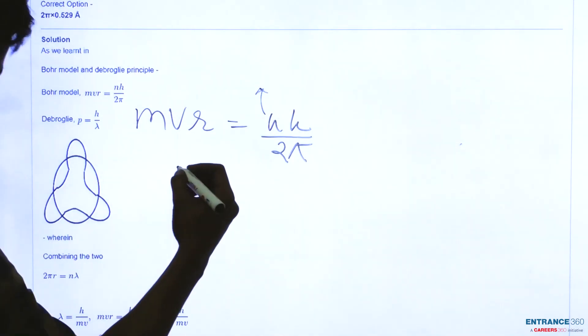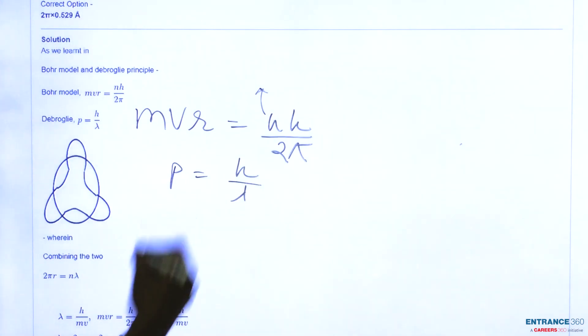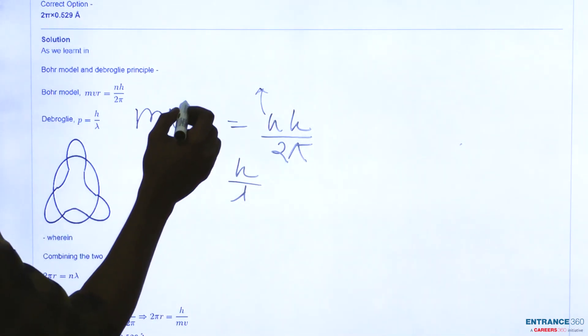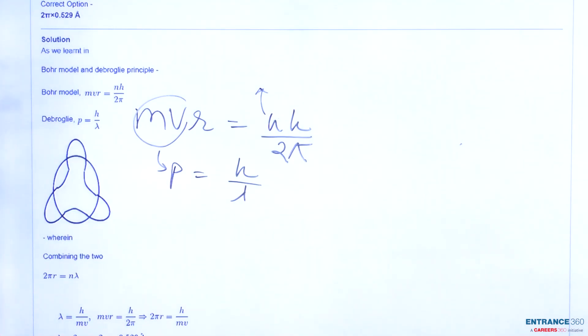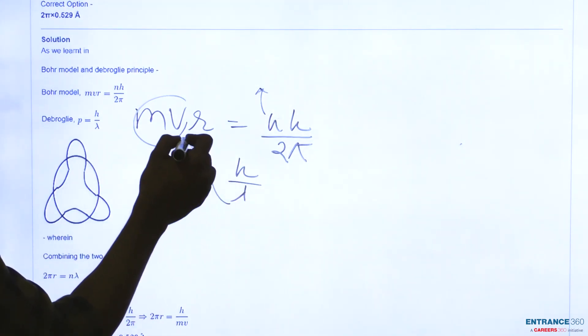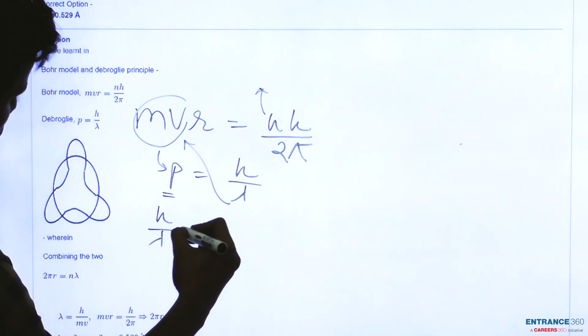So we have equation of momentum which is given as h upon λ and we can replace the value of mv by this p which is product of mass and velocity, called as momentum. So we will use this in this equation and this will become h upon λ into r is equal to nh upon 2π.